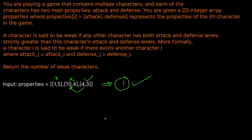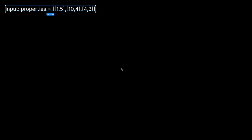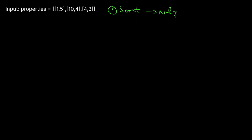It's easy to identify weak characters by eye, but how do we code this up? There are two approaches: the first is to sort by attack and then compare defense levels. Unfortunately any sort algorithm is O(n log n). However, we can actually improve on this because there exists a linear solution using bucket sort, which is what we're going to go over.